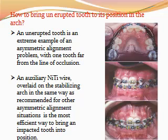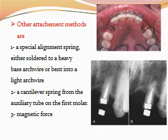To bring the unerupted tooth to its position in the arch, an auxiliary NiTi wire overlaid on the stabilizing arch is the most efficient way to bring an inverted tooth into position. Other attachment methods include special alignment springs either soldered to a heavy base arch wire or bent into a light arch wire, or a cantilever spring from the auxiliary tube on the first molar. Magnetic force can also be used.